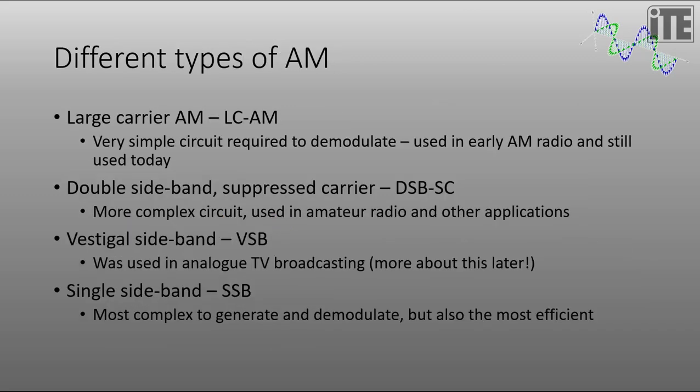There's different types of Amplitude Modulation. Large Carrier Amplitude Modulation, which is the simplest of all. Specifically, it uses a very simple circuit to demodulate the signal. And that's one of the reasons it was used in early AM radio and is still used today. It makes the cost of building a radio receiver very low. And of course, that's what we needed back in the 1920s.